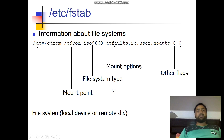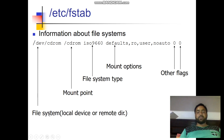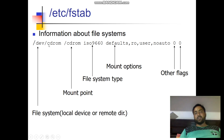Then /etc/fstab — it contains information about file systems. For example: /dev/cdrom /cdrom iso9660 defaults,ro,user,noauto 0 0. Here '/dev/cdrom' is the local device or remote directory containing the file system. '/cdrom' is the mount point — where the particular file system is mounted, through which we can access the file.